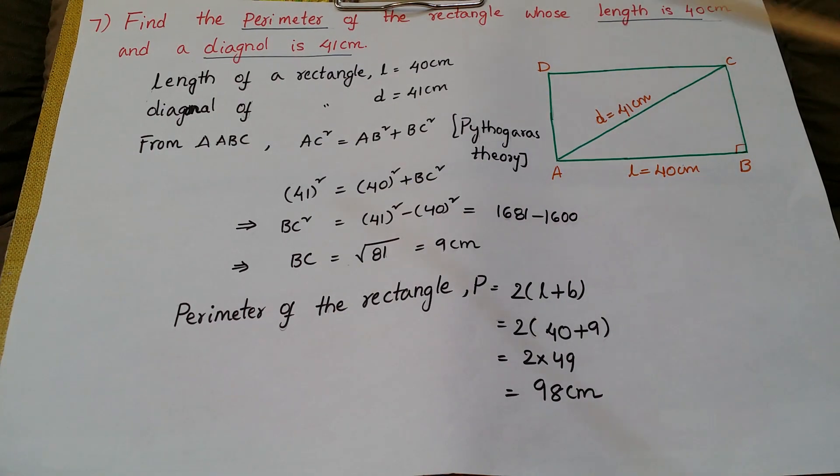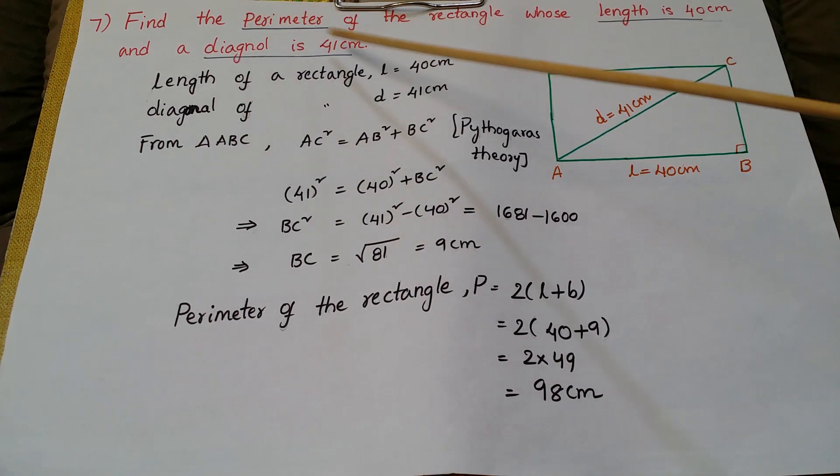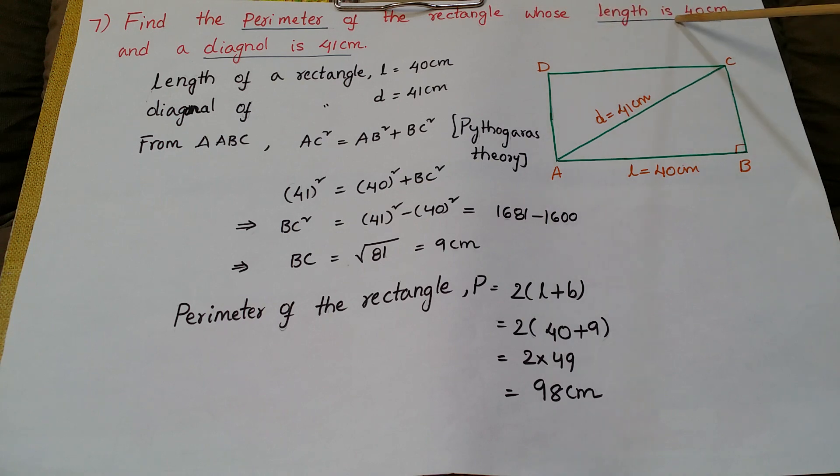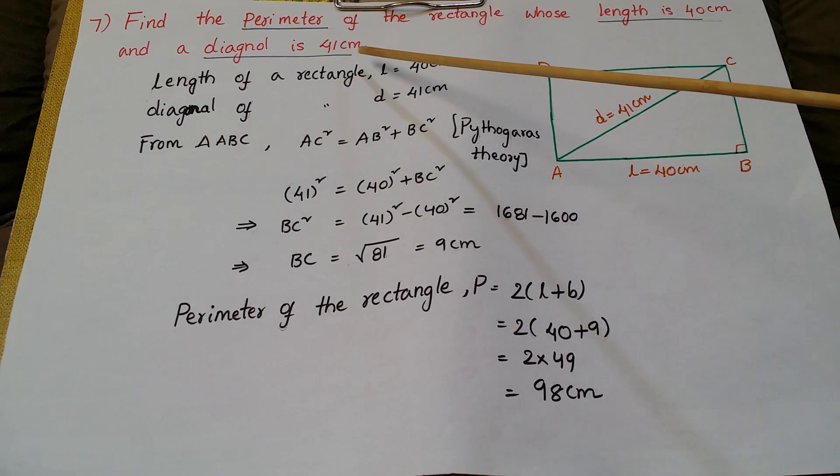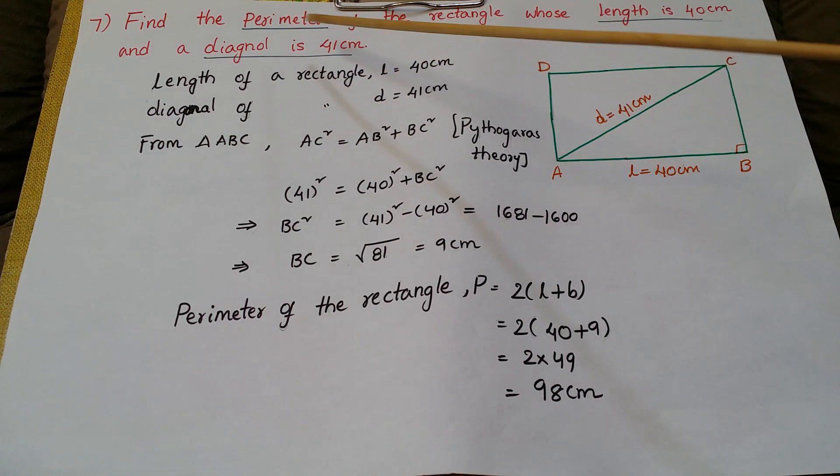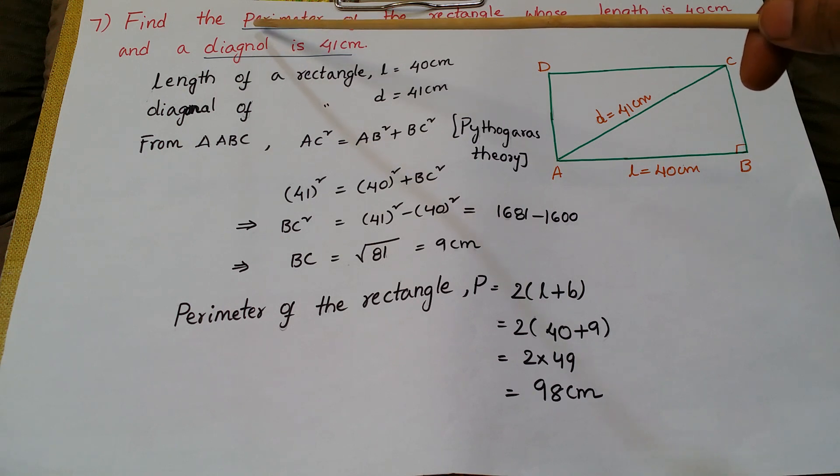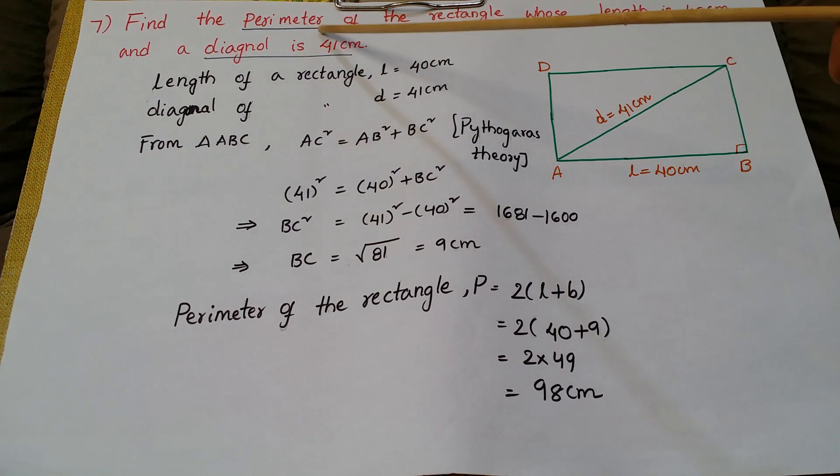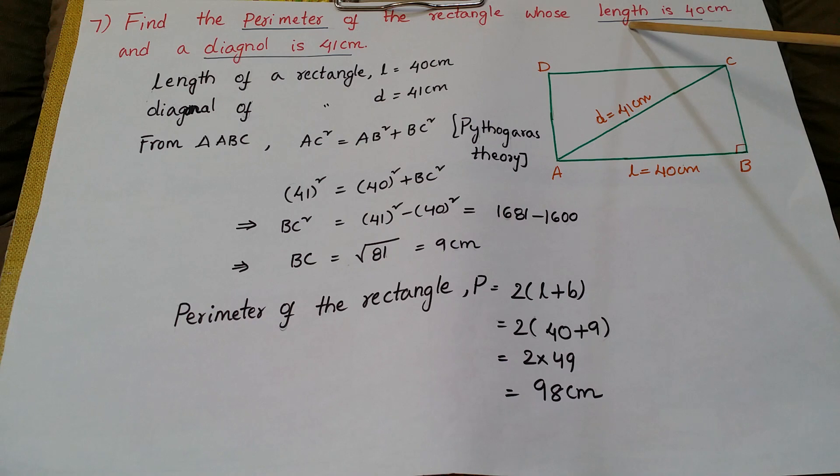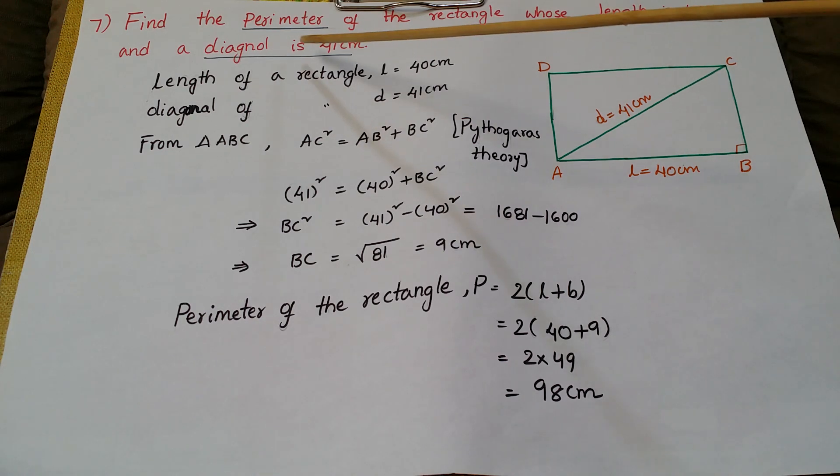This is a problem from NCERT 7.1. Find the perimeter of the rectangle whose length is 40 centimeters and diagonal is 41 centimeters. So first, underline the important words: perimeter, we have to find out, and length of rectangle is 40 centimeters and diagonal is 41 centimeters.